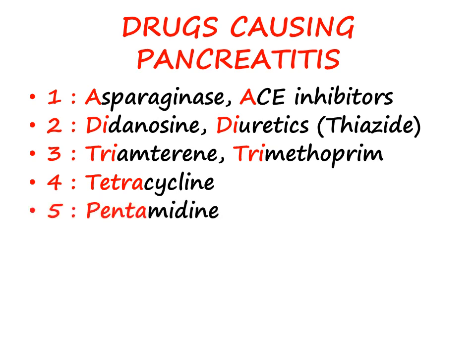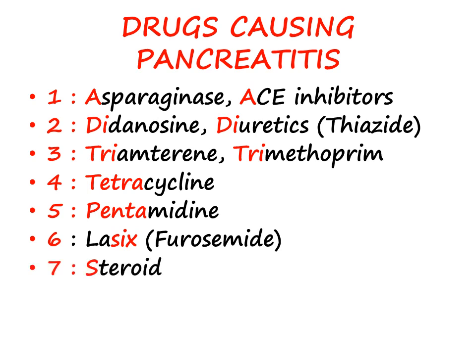Five is 'penta,' standing for pentamidine. Six — the popular drug Lasix, whose action lasts six hours — stands for furosemide. Seven is a seven-letter word starting with S: steroids. Eight — valproate sounds like 'eight' — and E (eight) also stands for estrogens. So the drug mnemonic recap: 1-asparaginase/ACE inhibitors, 2-didanosine/diuretics, 3-triamterene/trimethoprim, 4-tetracycline, 5-pentamidine, 6-furosemide, 7-steroids, 8-valproate and estrogens.